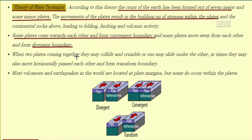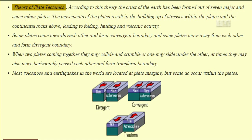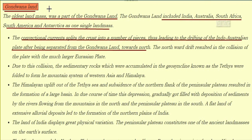When two plates come together they may collide and crumble, or one may slide under the other. At times they may move horizontally past each other and form a transform boundary. Most volcanoes and earthquakes in the world are located at plate margins, but some also occur within the plates. In this image we see the divergent, convergent, and transform plates.